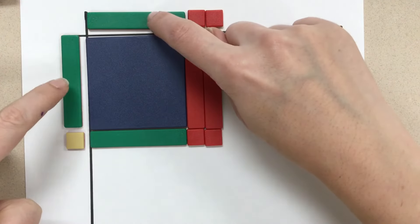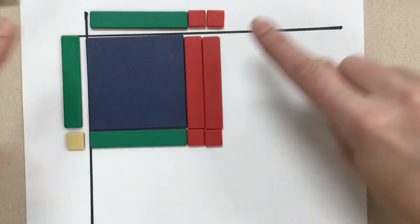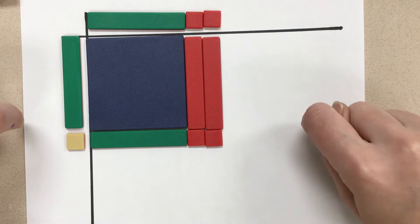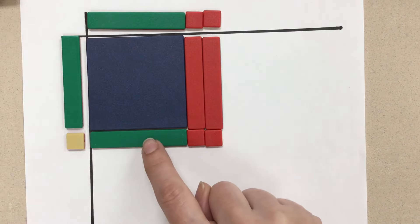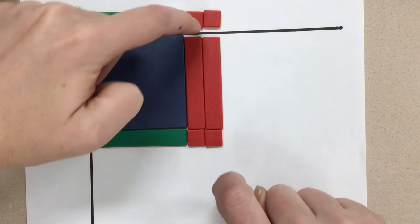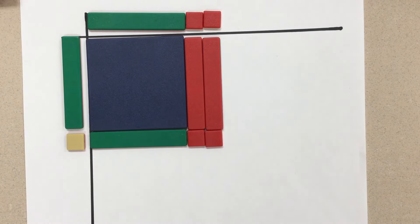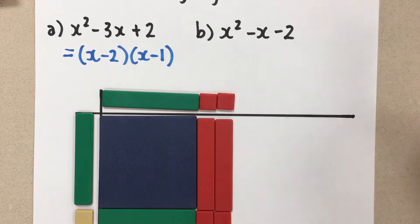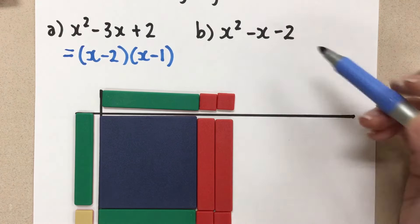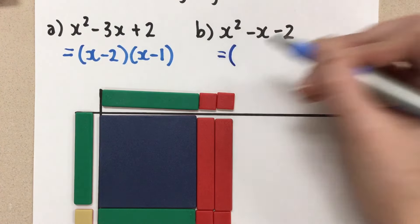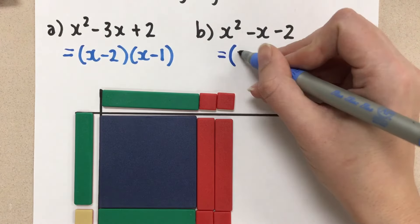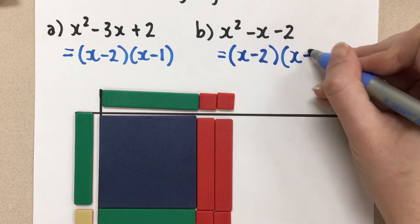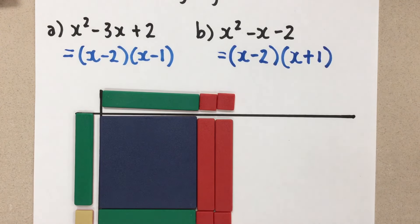We can check it now to make sure it makes sense. x times x is x squared. We have negative 2 times an x gives us negative 2x. And a positive 1 and an x gives us a positive x. And then a positive 1 times negative 2 gives us the negative 2. So it does work if we look at it backwards. So to factor x squared minus x minus 2, we think about the length and the width of the rectangle, and we get x minus 2 times x plus 1. And we've factored it.